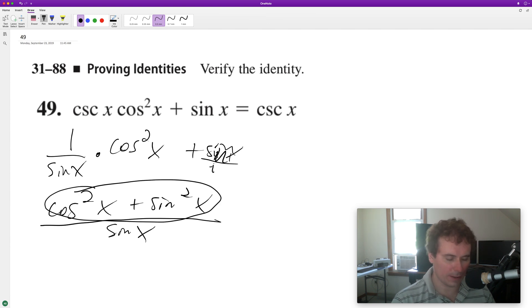So interestingly enough, cos²x plus sin²x is equal to 1, so we have 1/sin x, and that is also equal to csc x, and that verifies our trig identity.